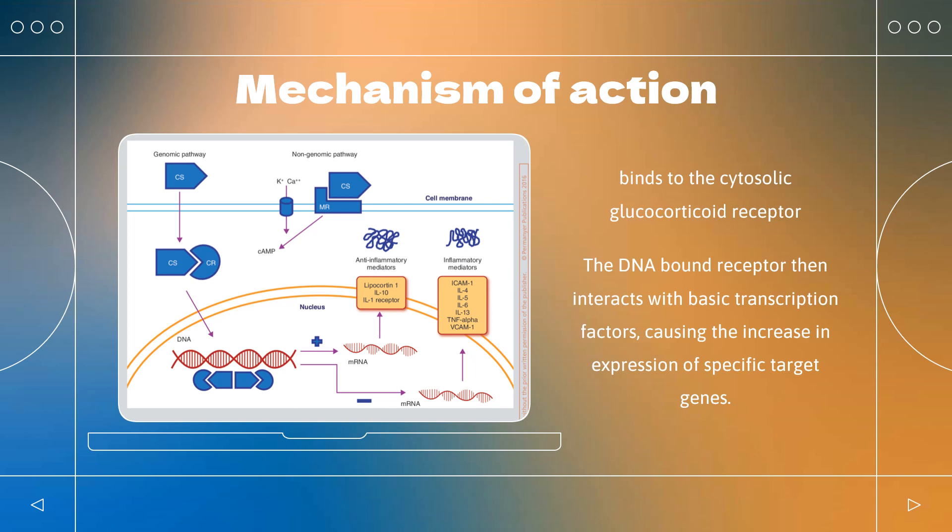Additionally, the immune system is suppressed by corticosteroids due to a decrease in the function of the lymphatic system, a reduction in immunoglobulin and complement concentrations, the precipitation of lymphocytopenia, and interference with antigen-antibody binding.